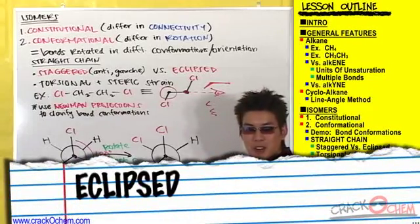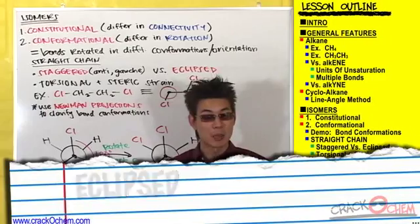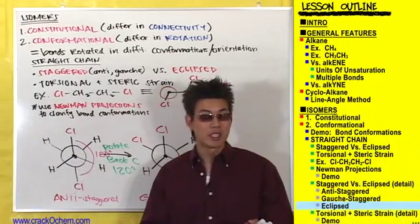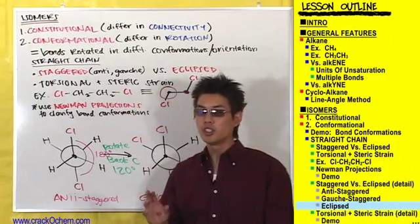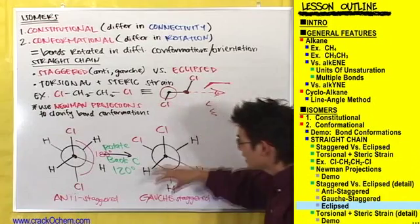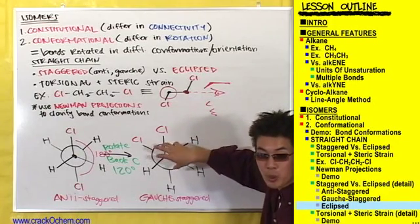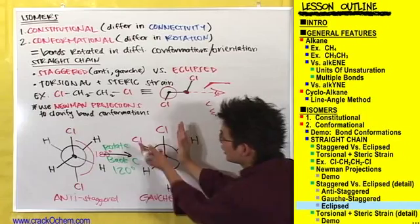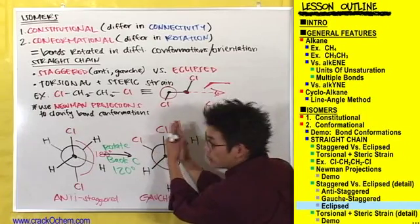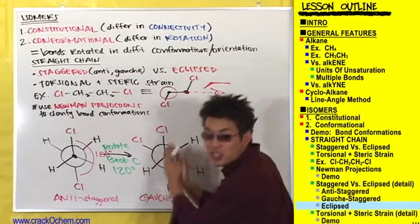Let's draw the last type of conformational isomer now. To get to this last type of conformational isomer — the eclipsed conformation — all you have to do is take the gauche isomer and rotate the back carbon 60 more degrees so that these chlorines will be rotated directly on top of each other.